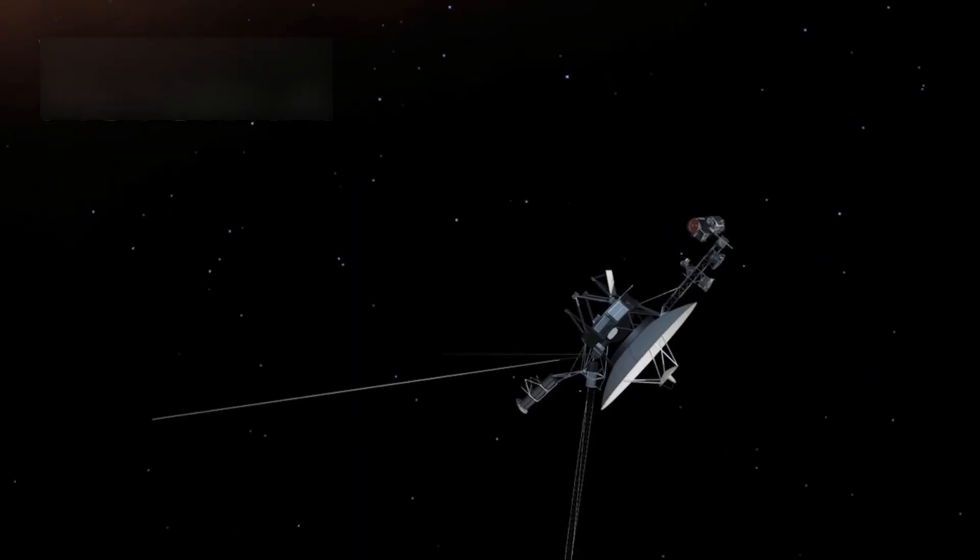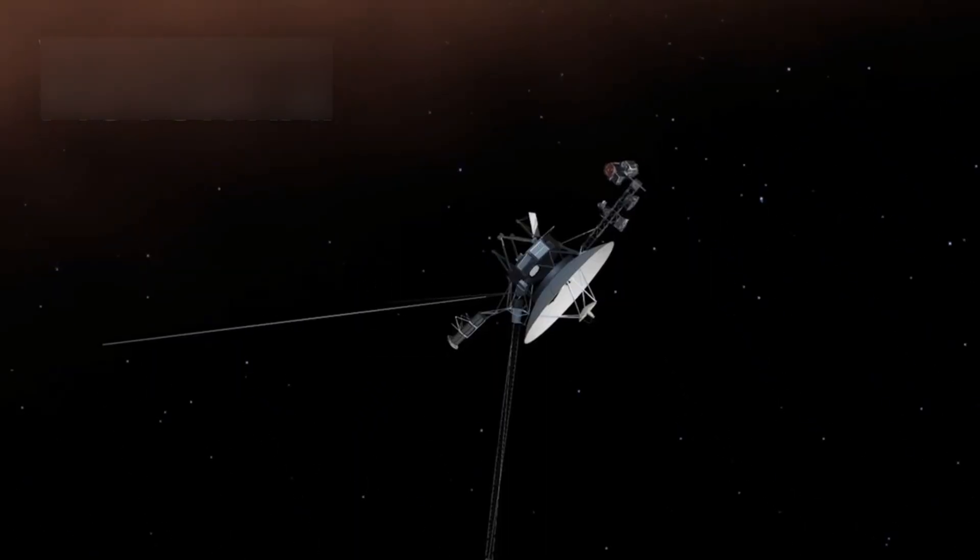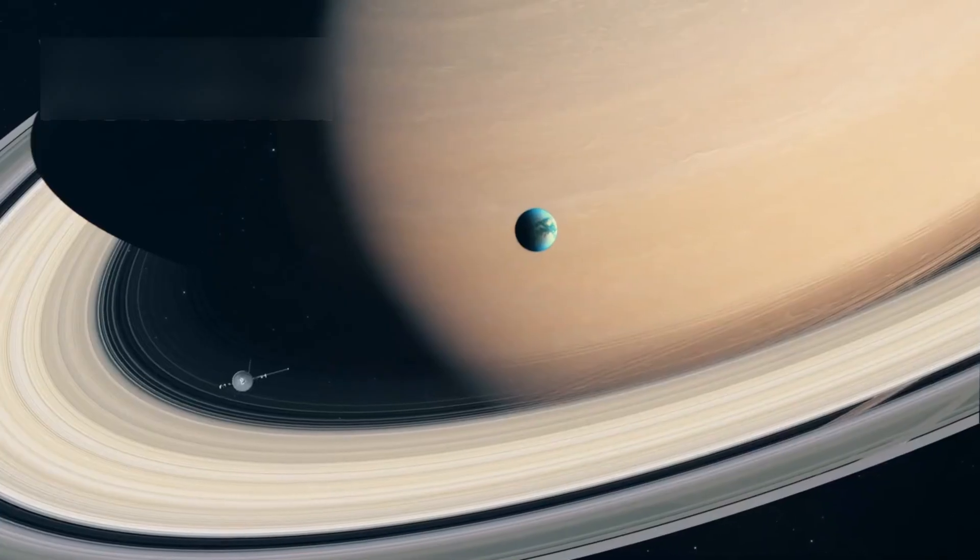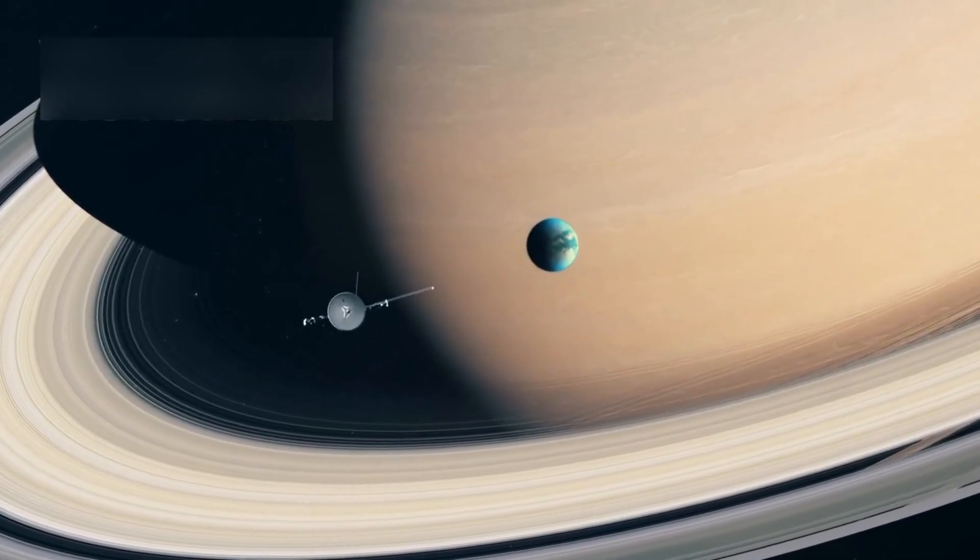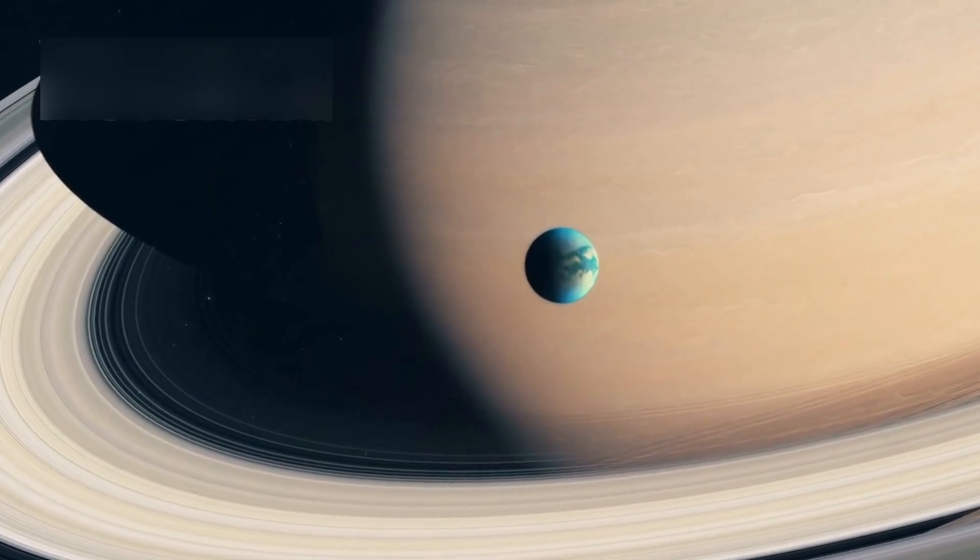It was designed to explore the outer planets, but it has defied all expectations, traveling more than 23 billion kilometers from Earth. Its journey has taken it past Jupiter, Saturn, and finally out of the solar system, into a region no spacecraft has ever reached before.